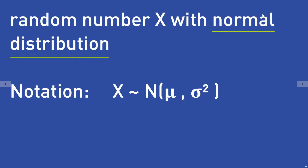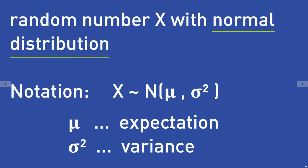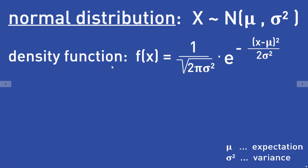Let's assume you have a random number x that has the normal distribution. We write it like this, which means x is normally distributed. Mu is called the expectation of the normal distribution and sigma squared is called the variance. The normal distribution is pretty famous and defined by using a probability density function: f of x equals 1 divided by the square root of 2 pi sigma squared, times the exponential function of minus x minus mu squared divided by 2 times sigma squared.